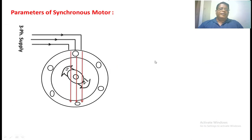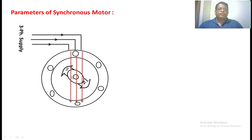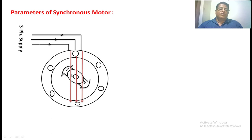First we are going to see the parameters of a synchronous motor. The stator winding is equipped with a 3-phase winding, and 3-phase terminals are taken outside. For these 3-phase terminals we are giving a 3-phase supply. On the rotor side, assume two poles are present, and for this rotor we are going to give the DC excitation to the field winding. The rotor will be rotating in the same direction, and the speed is also equal to the synchronous speed.